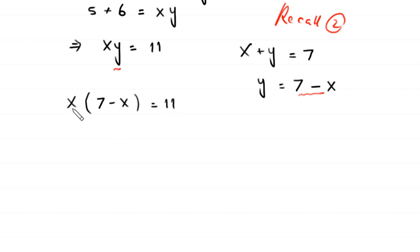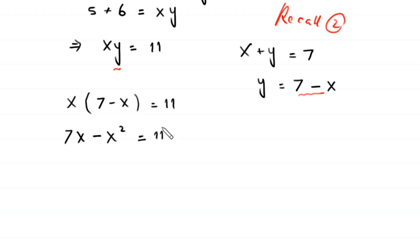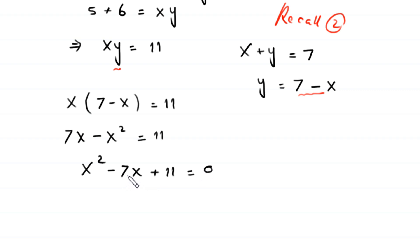This becomes x times (7 minus x) equals 11. Distributing x: 7x minus x squared equals 11. Moving all terms to the right-hand side gives x squared minus 7x plus 11 equals 0. This is a quadratic equation that is not factorable, so we solve it using the quadratic formula.